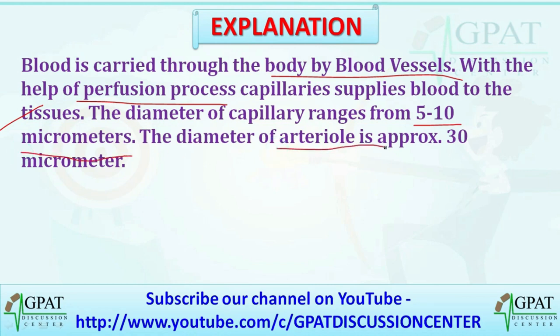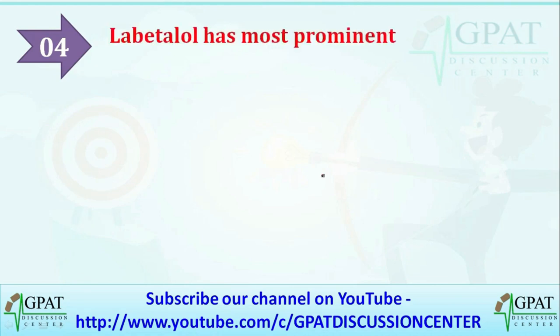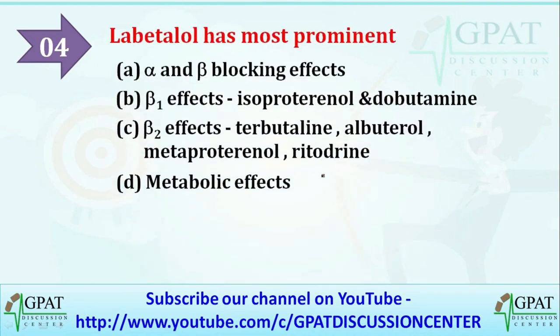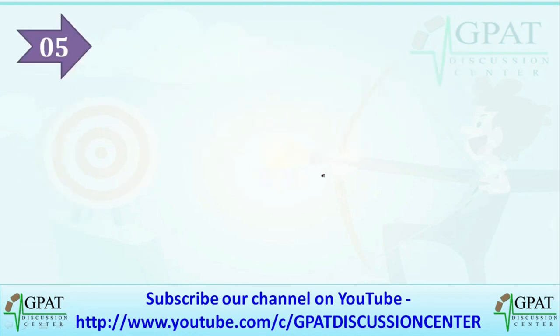The next question: Labetalol has most prominent — options are alpha and beta blocking effects, beta-1 effects like isoproterenol or dobutamine, beta-2 effects like terbutaline, albuterol, metaproterenol, or ritodrine, or metabolic effects. The correct answer is alpha and beta blocking effects.